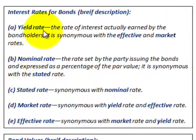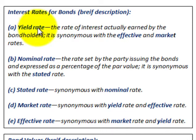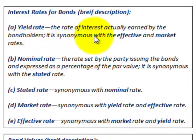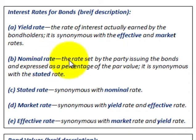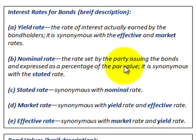Now let's look at interest rates on bonds. The yield rate is the rate of interest actually earned by the bondholders, and it's synonymous with the effective or market interest rate. The nominal rate is the rate set by the party issuing the bonds and is expressed as a percentage of the par value. It's synonymous with the stated interest rate.